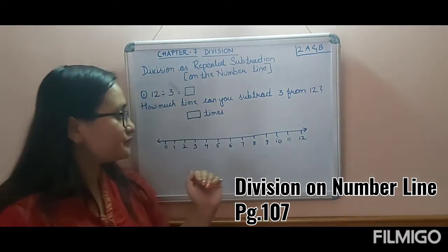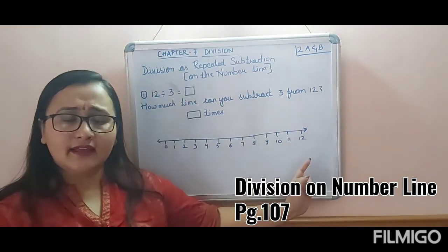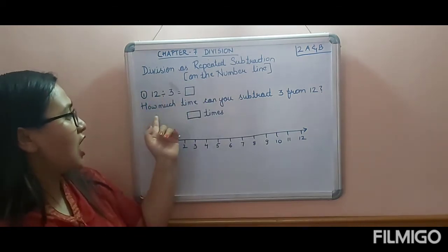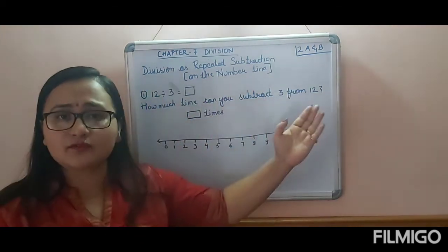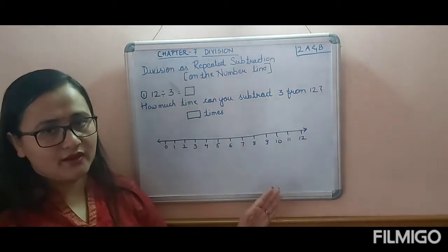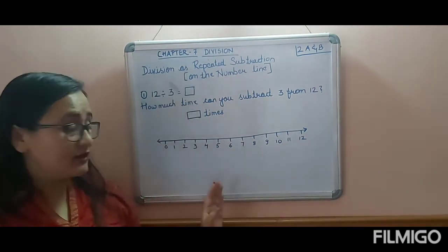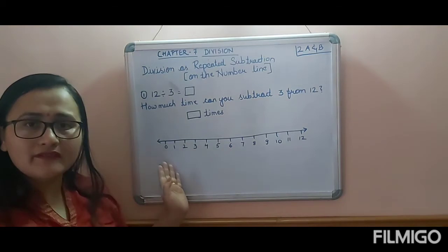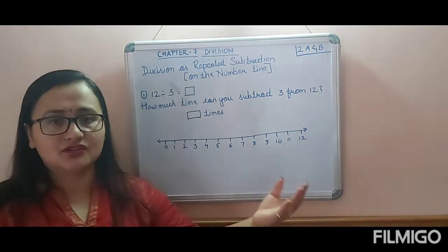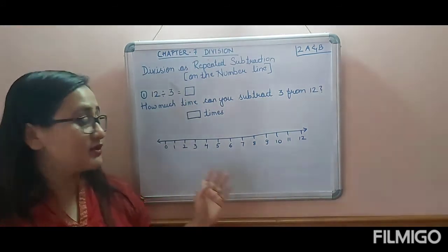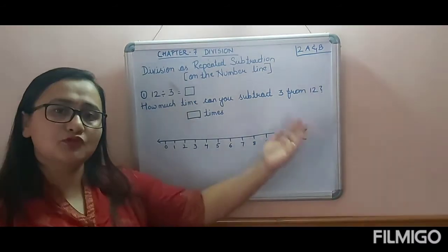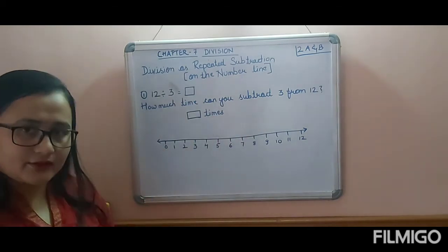I have already drawn a number line with numbers up to 12. We are asked to find out 12 divided by 3 — how many times can you subtract 3 from 12. Now, before we start, in subtraction on a number line we always jump backward. In other topics like addition we jump from zero, but here in division we do backward jumping.